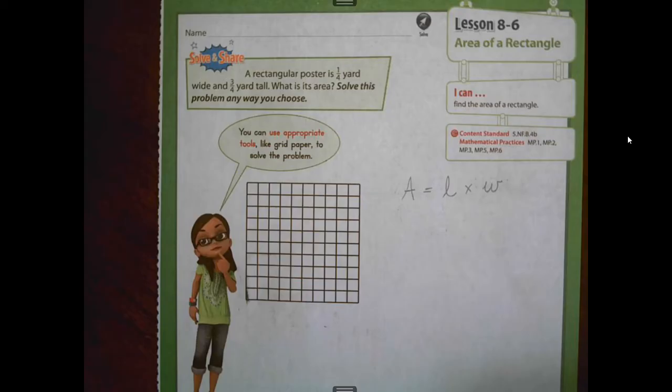And when we are looking for area, some examples in real life would be maybe you and your parents decide you're going to re-carpet your bedroom. So you need to find the number of square units in your bedroom. Maybe it's yards, maybe it's feet, however your carpet is priced.